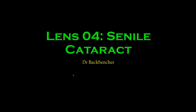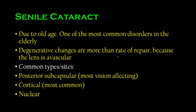Welcome back. Today we'll be studying senile cataract — the cataract which occurs due to old age. It is one of the most common conditions found in elderly people. In fact, it's so common that of people who reach 70 years of age, 90% have already developed cataracts.